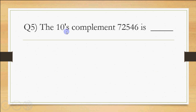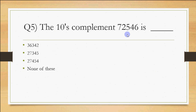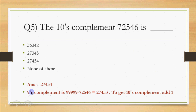To find the 9's complement of a 5-digit number, subtract each digit from 9. So we write 99999 and subtract 72546. That gives us 2, 7, 4, 5, 3. Then for the 10's complement, add 1 to the last digit: the result is 2, 7, 4, 5, 4. That is the answer, which is option number 3.